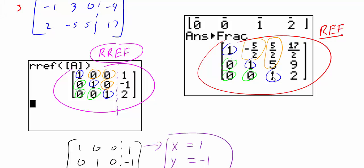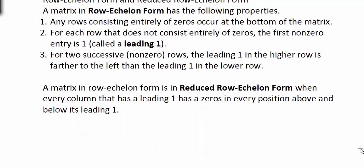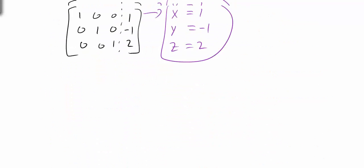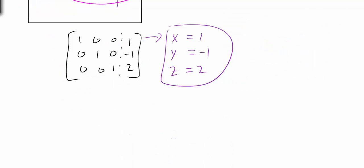For reduced row echelon form, everything above and below each leading 1 is going to be a 0, whereas in row echelon form, only the numbers below the leading 1s are zeros.